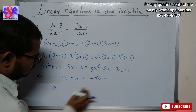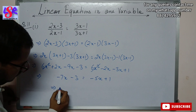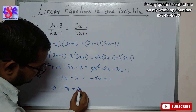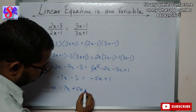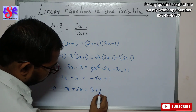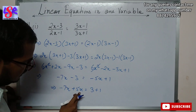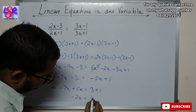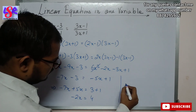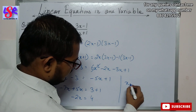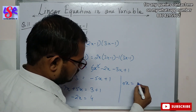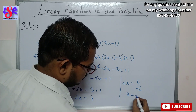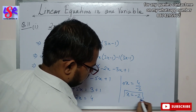Putting variables on one side and constants on the other: -7x + 5x = 3 + 1, giving -2x = 4. So x = 4/(-2) = -2 as the answer.